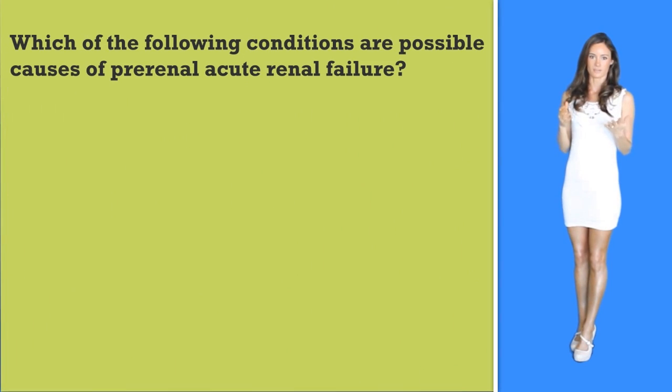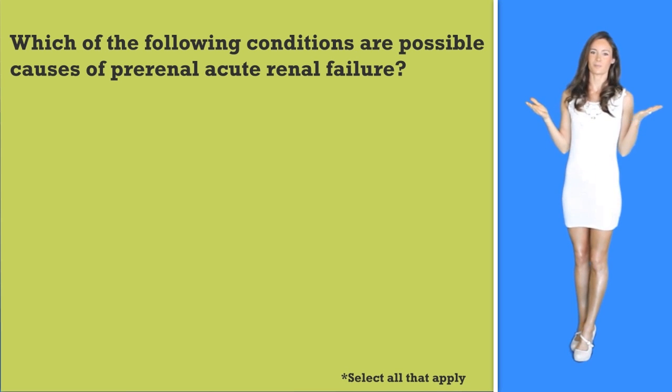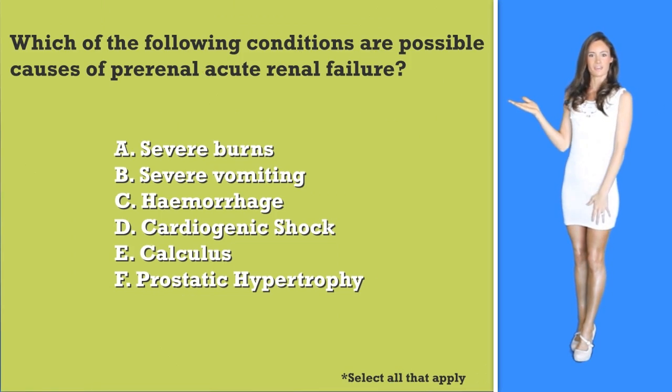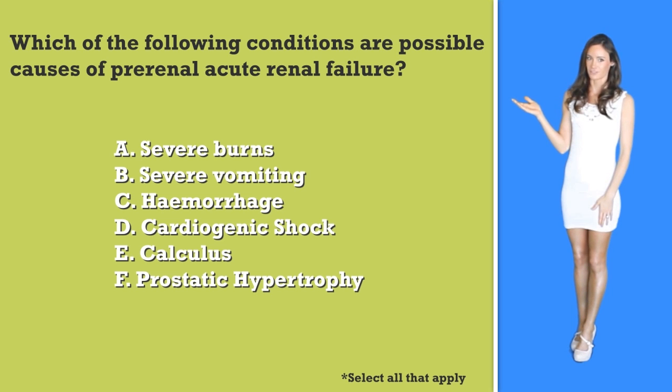This first question is one of the dreaded select-all-that-apply, but the more you do them the better you will get. This question is testing whether you can detect the location of the failure. Which of the following conditions are possible causes of pre-renal acute renal failure? Select all that apply: A) severe burns, B) severe vomiting, C) hemorrhage, D) cardiogenic shock, E) calculus, or F) prostatic hypertrophy.